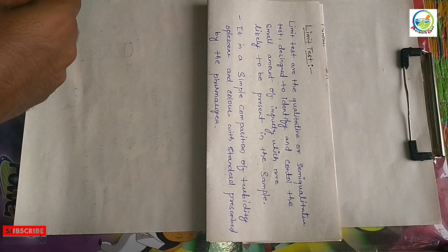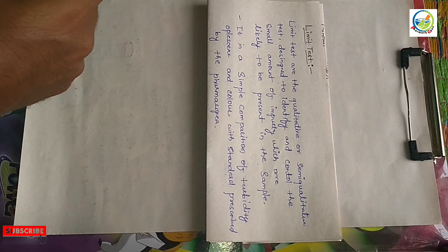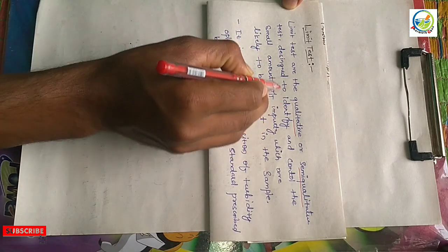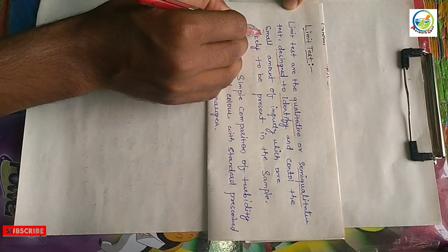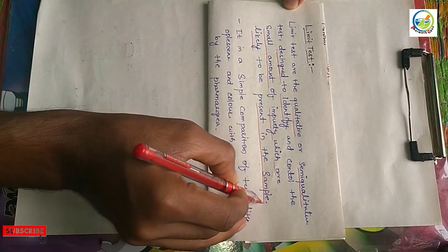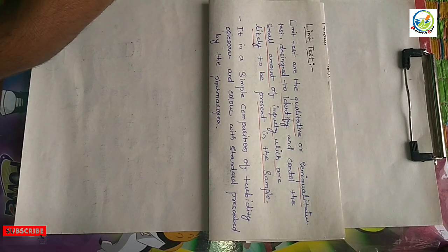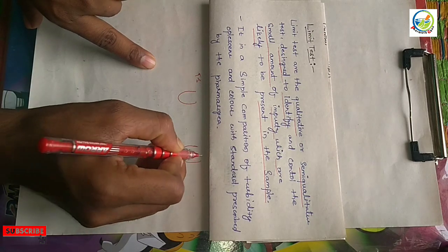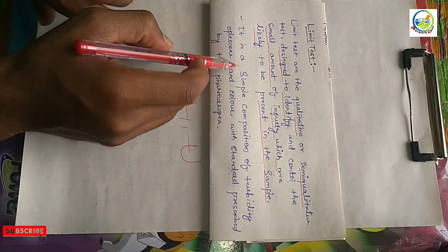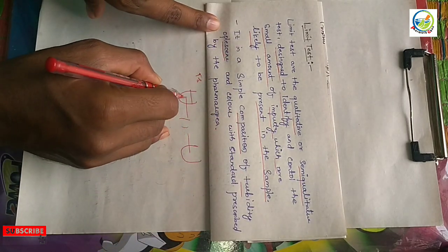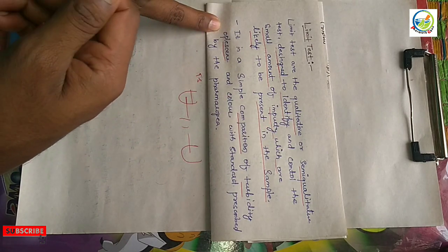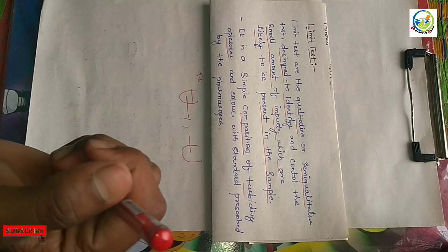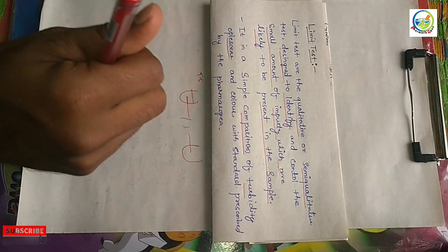Today's topic is limit test for heavy metals. Limit tests are qualitative and semi-quantitative tests designed to identify and control small amounts of impurity which are likely to be present in a sample. It is a simple comparison of turbidity, opalescence, and color with a standard prescribed by the pharmacopoeia. The test solution and standard solution are compared with each other.